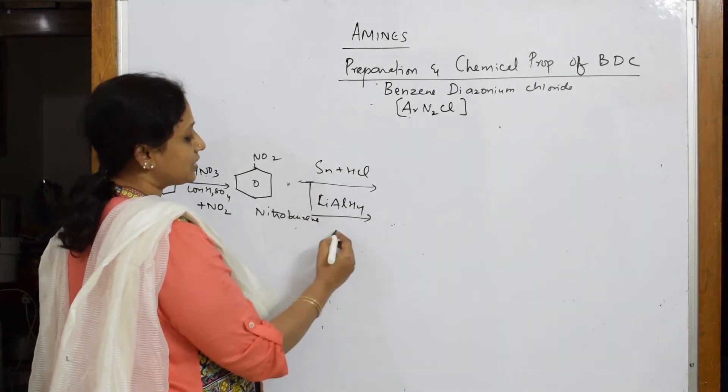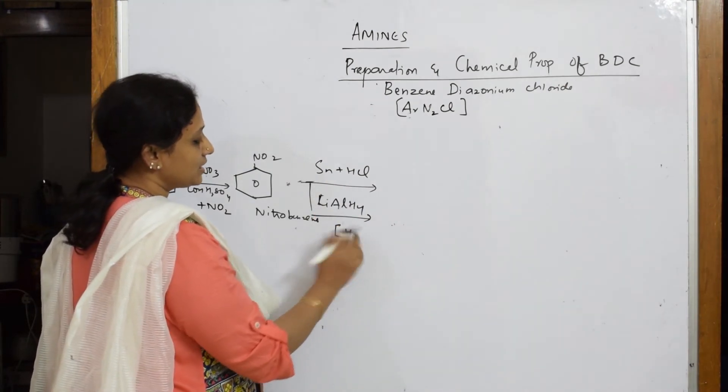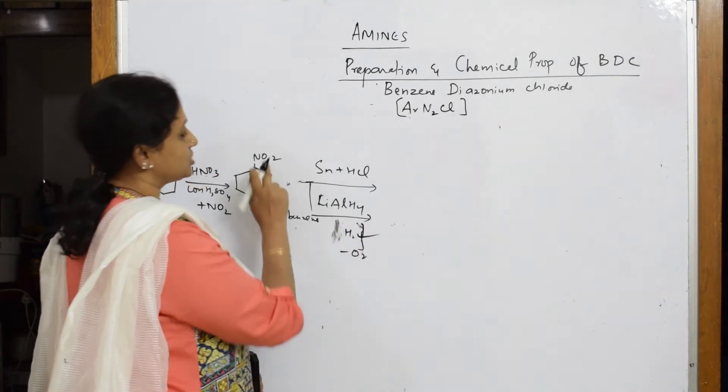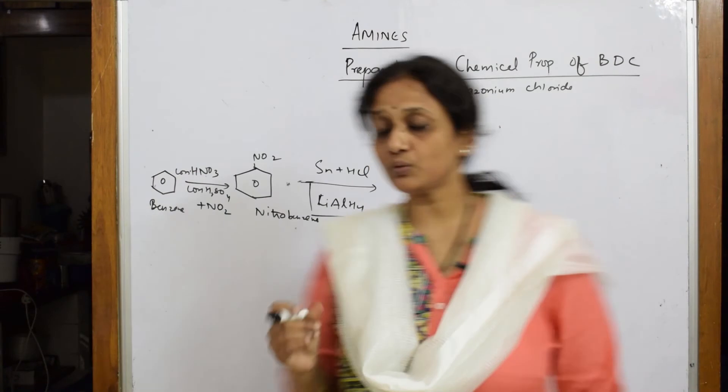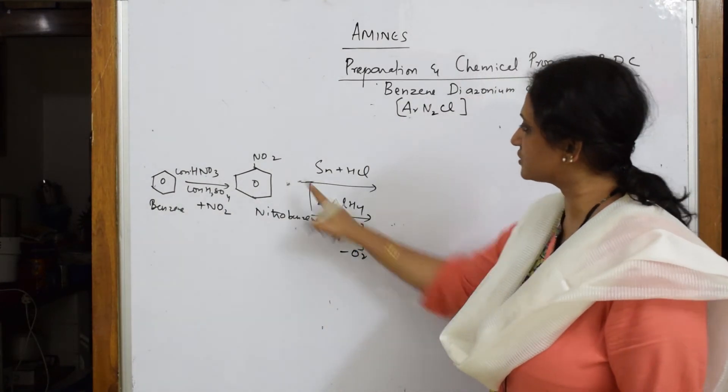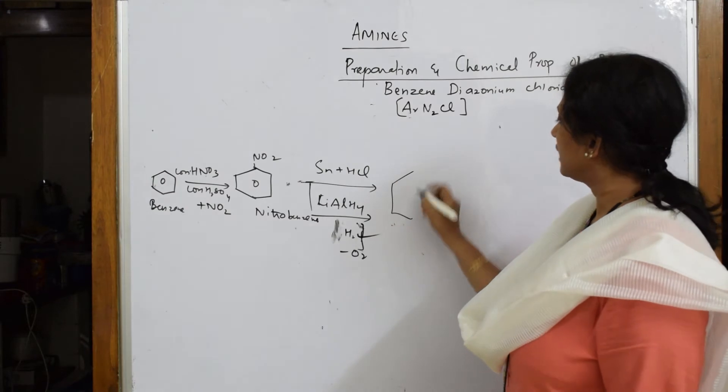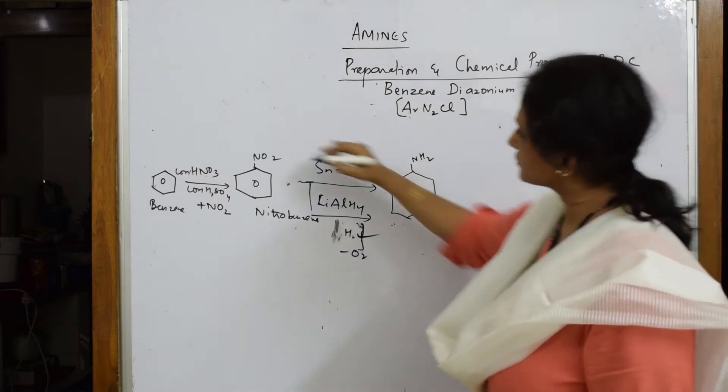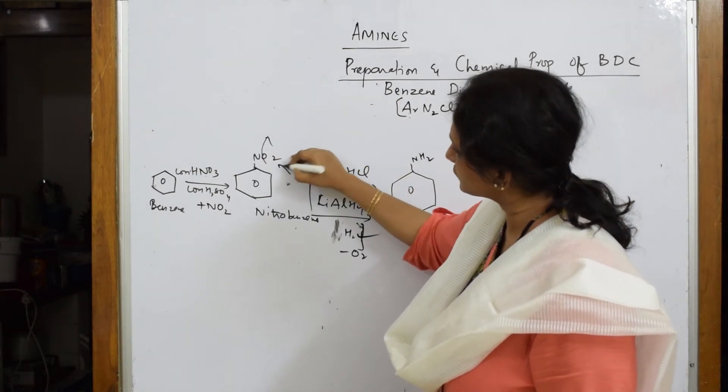These two are reducing agents. They are going to supply hydrogen to this, remove oxygen from here. What do I get? I'm going to get a compound because hydrogen is added, oxygen is removed. From nitrobenzene I'm going to get aniline. This is lost and hydrogen is added - this is called aniline.